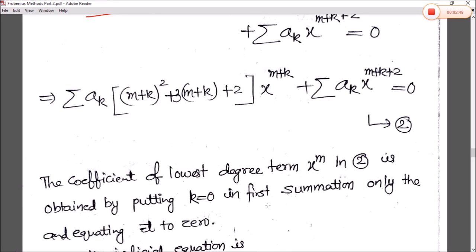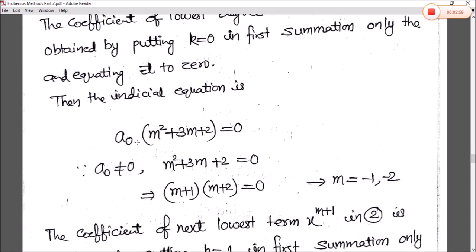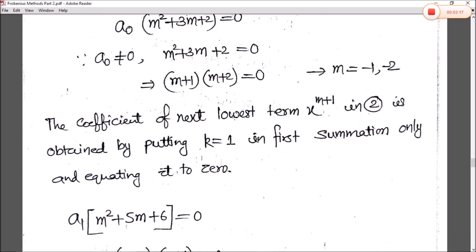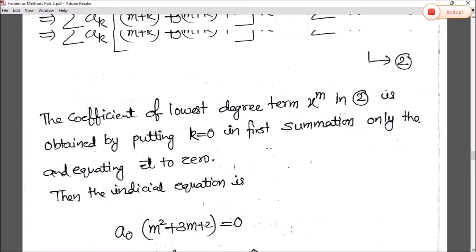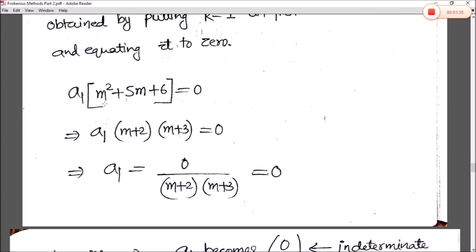For the lowest degree term x^m, put k = 0 in the first summation: a₀(m² + 3m + 2) = 0. Since a₀ ≠ 0, we get m² + 3m + 2 = 0, so (m+1)(m+2) = 0, giving m = −1 and m = −2. For the next lowest term x^(m+1), put k = 1 in the first summation: a₁(m² + 5m + 6) = 0.